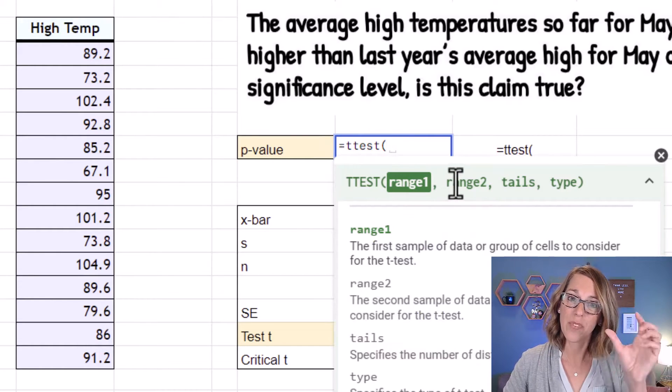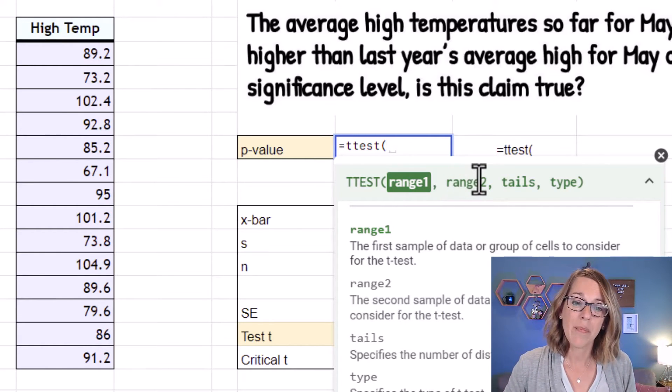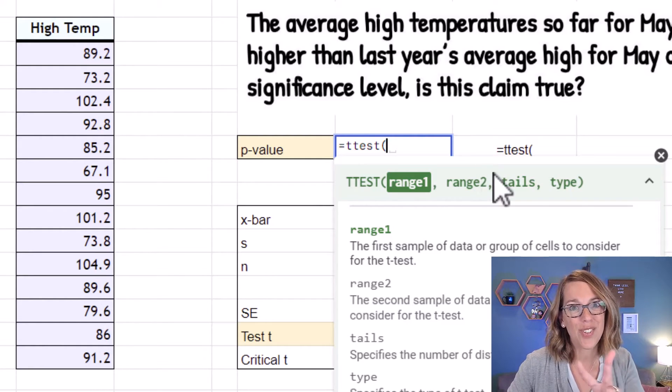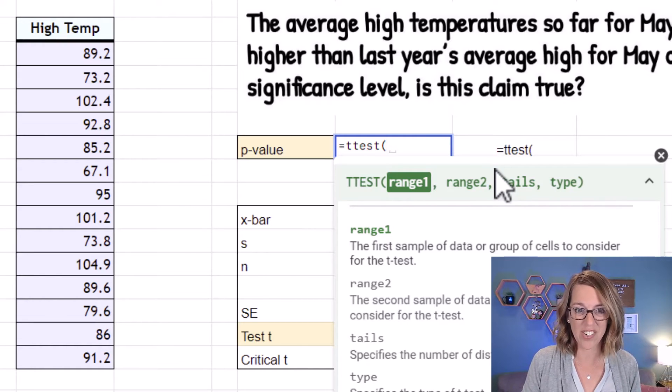It's got a range one. We're going to use our sample data, but it also has a range two. Google Sheets will only actually do two sample tests, so we can go ahead and trick it by putting in a second range.